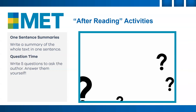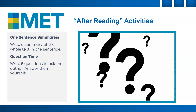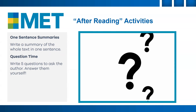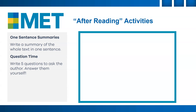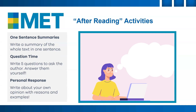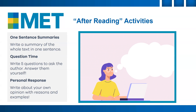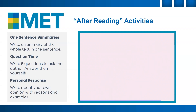Question time — write five questions you would like to ask the author, then use evidence from the text and your own knowledge to try and answer them yourself. Personal response — write your own opinion about the same topic and whether what you read has changed your mind or perspective. Write about whether you enjoyed it or not and why, remembering to support your opinion with reasons and examples. This will help you practice for the writing section at the same time.